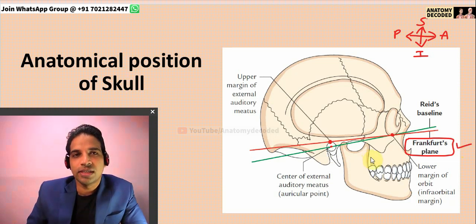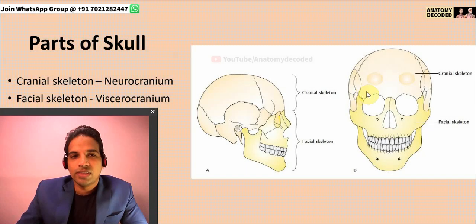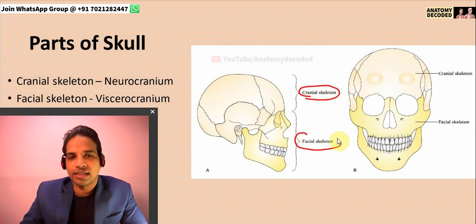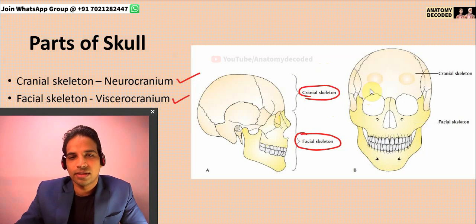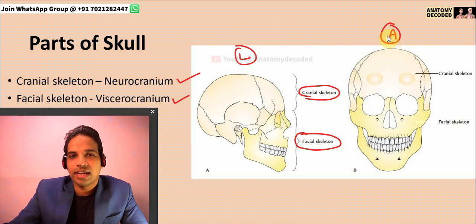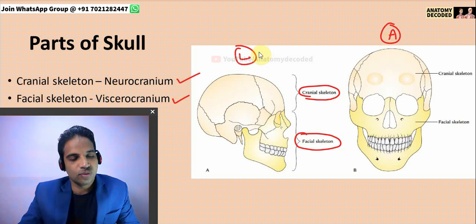Now let's see the parts of the skull. In general, the skull can be divided into two parts: one is referred to as the cranial skeleton, and the other is referred to as the facial skeleton. Cranial skeleton is also referred to as neurocranium, and facial skeleton is also referred to as viscerocranium. The facial skeleton is more on the anterior aspect, whereas the remaining part of the skull is the cranial skeleton.